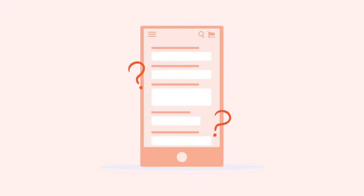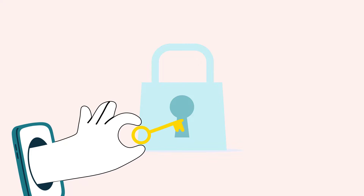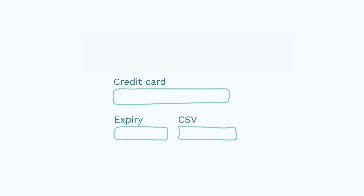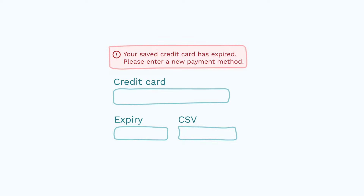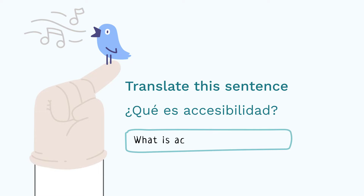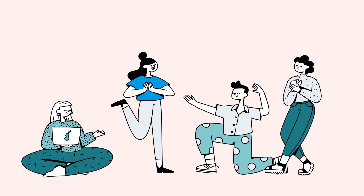There are some scenarios where you don't have to worry about this criterion. For example, when the information is required to ensure the security of the content. This might occur with a password and confirm password input field — the confirm password field checks the password against the original one entered. Other examples include when previously entered information is no longer valid, like an expired credit card, or when re-entering the same information is essential, like a game. Although there are different ways you can meet this criterion, always choose the option that is best for your users.